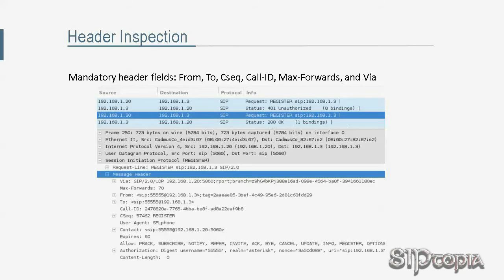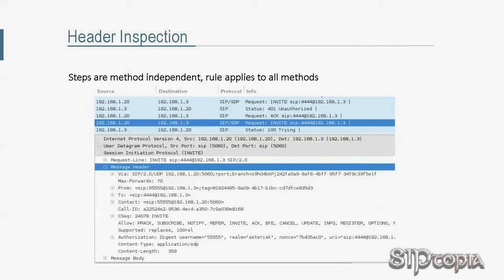Next up is header inspection. From earlier tutorials, we know that every request must have all six mandatory header fields. If one or more of these mandatory header fields is missing or the request is malformed, the UAS responds with 400 Bad Request. Since these steps are all method-independent, this rule applies to all methods including REGISTER and INVITE. If the mandatory fields are all present but the request also has unrecognized or malformed header fields, the UAS should simply ignore or discard those respective header fields.